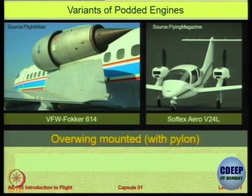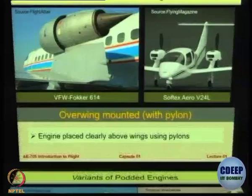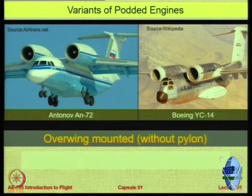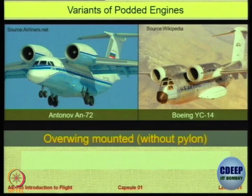You could also have engines over the wing, or halfway over the wings at the front. This particular variation is called upper surface blowing (USB), where the exhaust of the engines is used to flow over the wing — this is called powered lift, combining propulsion with aerodynamics.